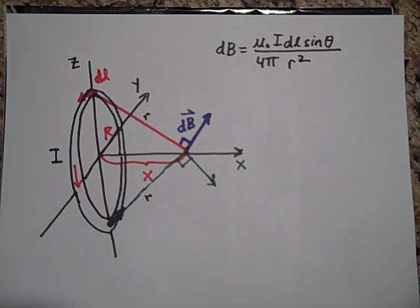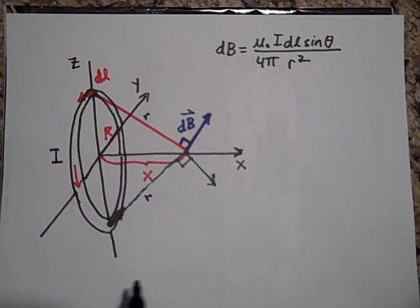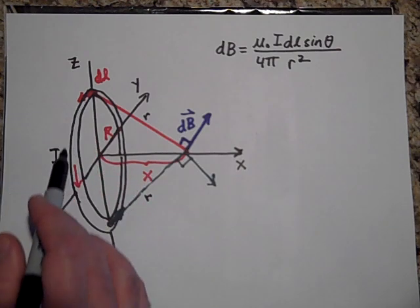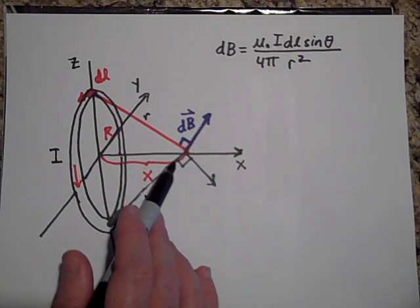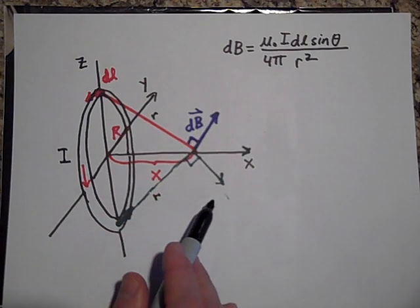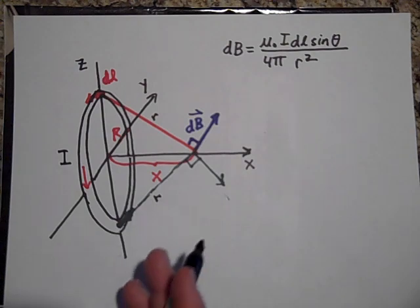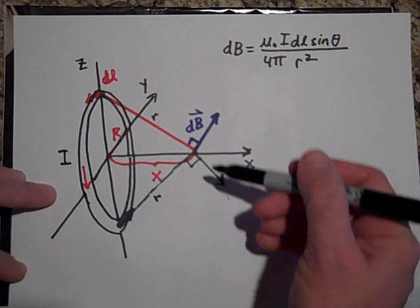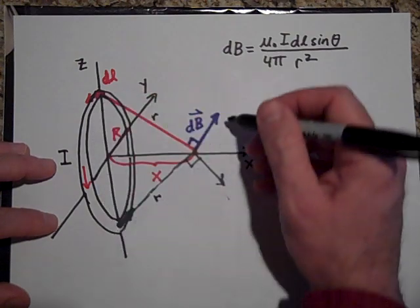Well, that's our magnetic field from this little DL up here. But here's the problem. Each one of these little DLs as you go around, they each point in a completely different direction. So this one points that way. The DL from this points that way. Excuse me, the dB from this points that way. So they're all... it kind of forms a teepee around here if you think about it. And for every one up here, there's one down here that's going to cancel.